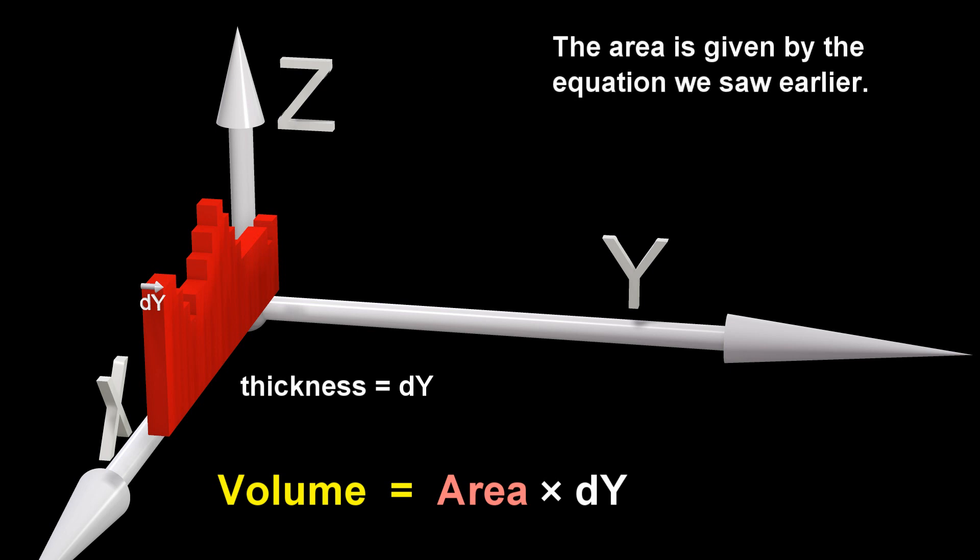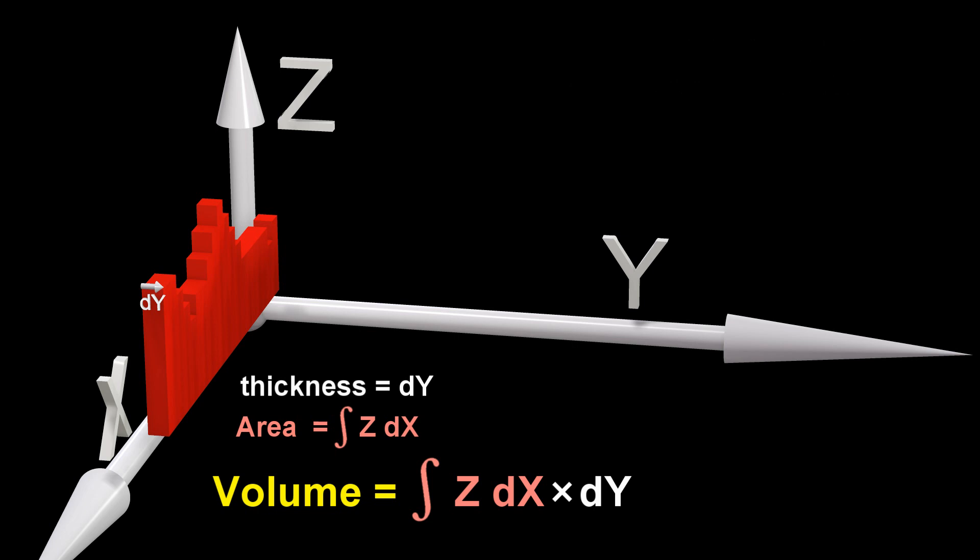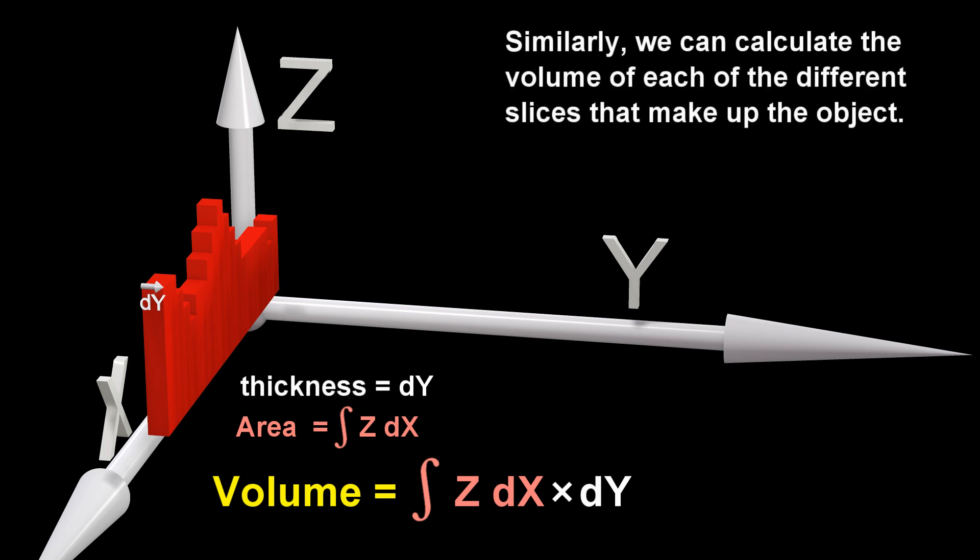The area is given by the equation we saw earlier. Similarly, we can calculate the volume of each of the different slices that make up the object.